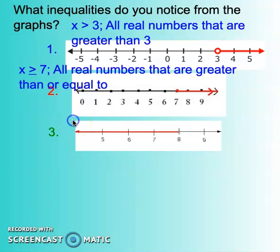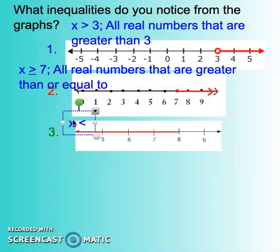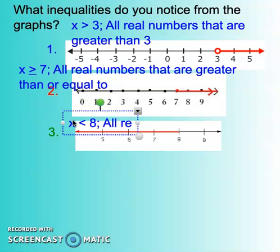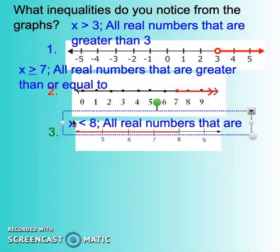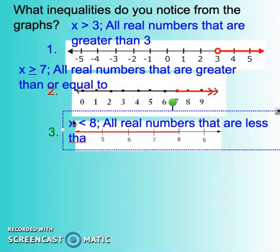Our last one: I notice it's an open dot but this one is going off to the left, so the ray is going to the left, which means it's less than. The open dot is on 8, so x is less than 8. That means it's all real numbers that are less than 8.